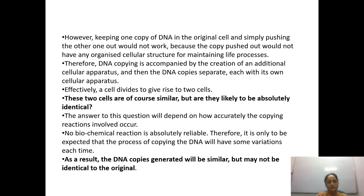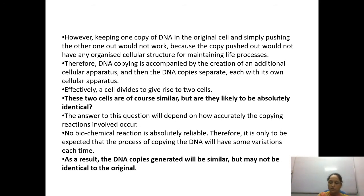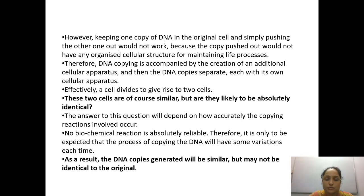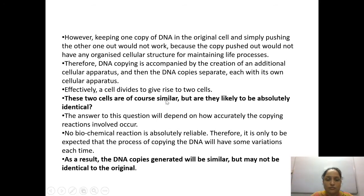When the copies separate, they should have all the components required for the survival of life — for example, mitochondria, Golgi apparatus, lysosomes. All these components are needed by the other cell too, so giving only the DNA copy to the progeny without the full cellular apparatus would not work. Progeny also requires all the components the parent has. Effectively, a cell divides to give rise to two cells. These two daughter cells will have all the components the parent cell had — similar, but likely not absolutely identical.